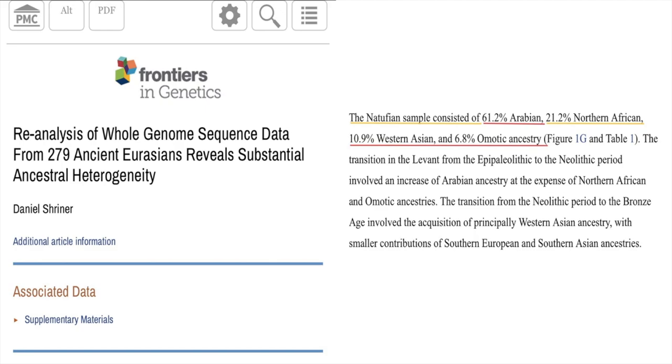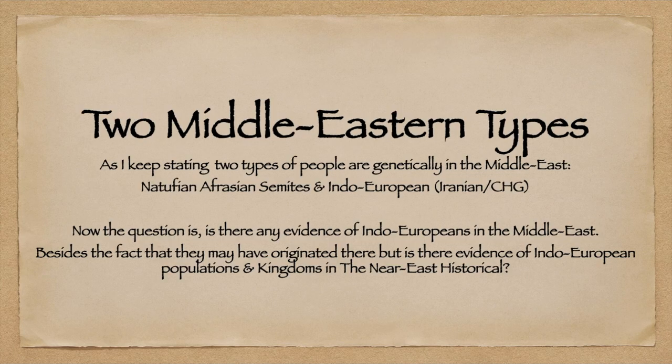As I keep stating, there are two types of people genetically in the Middle East: Natufian Afro-Asiatic Semites and Indo-European Iranian Caucasus hunter-gatherers. The question is: is there any evidence of Indo-Europeans in the ancient Middle East — any evidence from history of Indo-European populations and kingdoms in the Middle East historically? But this is where we end haplogroup E versus J, the proto-Semitic genome.